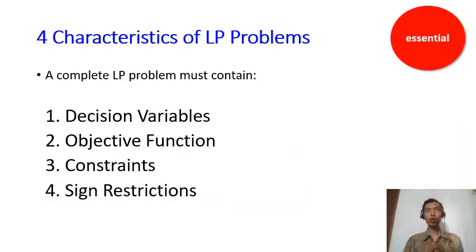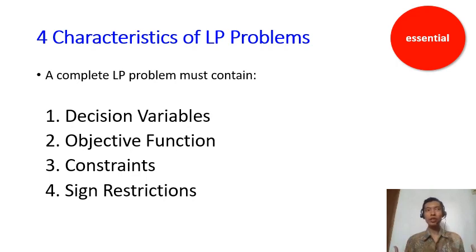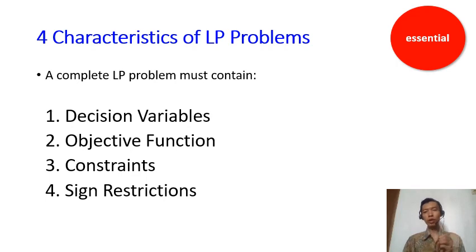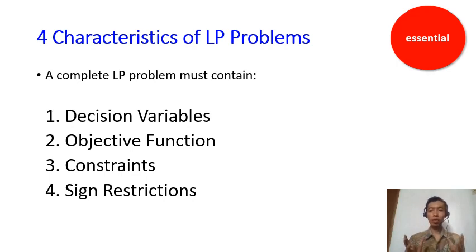You need to formulate a linear programming problem from a real world optimization problem. There are four characteristics that must exist in a linear programming problem. The first is called decision variables. The second is called objective function. The third is called constraints. And the fourth is sign restrictions. You must have all four of these characteristics for your formulation to be called a complete linear programming problem — you must not miss any of them.